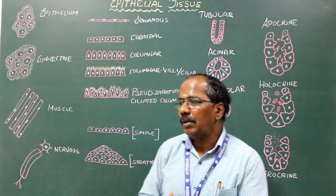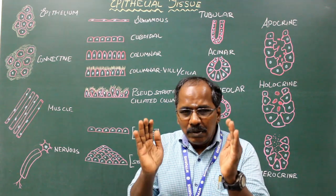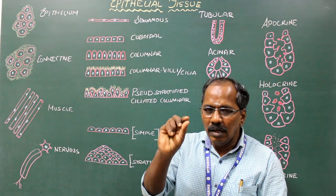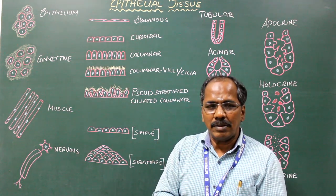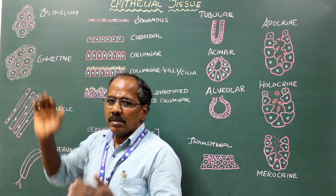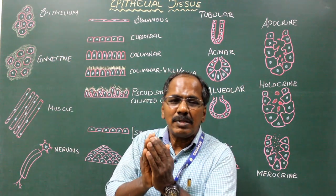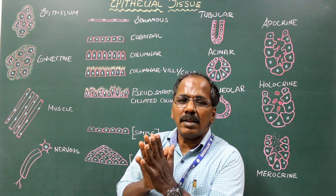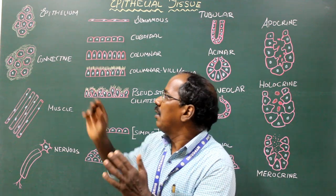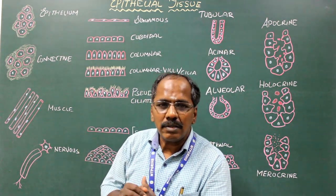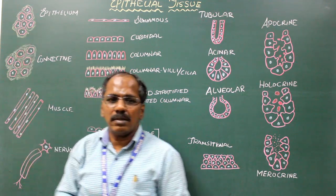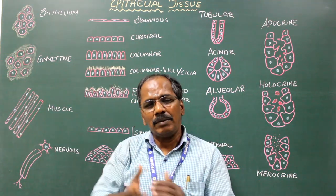Epithelial tissue consists of closely aggregated polyhedral cells with little or no intercellular substance. Polyhedral means the cells have many surfaces. Between the cells there is a substance known as intercellular substance; it may be very little or it may be absent.